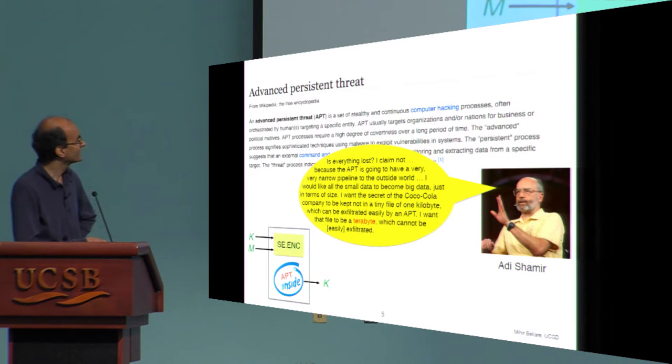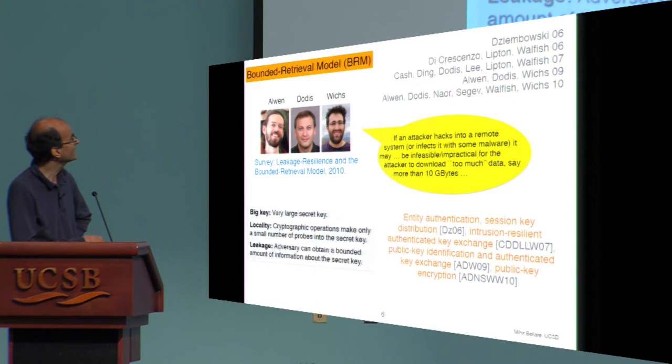In the case that the secret is a key, this corresponds to a model that was defined well before the Snowden revelations or Adi's enunciation of that idea in prescient work in the theory community starting with Zimbowski in 2006. And it evolved through a series of papers into what's now called the bounded retrieval model.